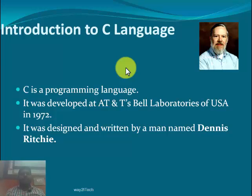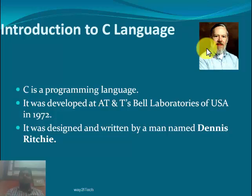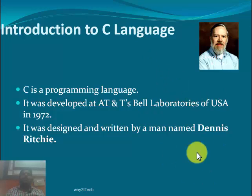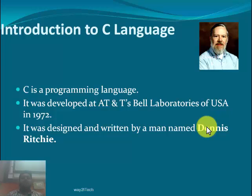Now, introduction to C language. What is C language? C is a programming language used to instruct the computer to perform some tasks. It was developed at AT&T Bell Labs in USA in 1972. It was designed and written by Dennis Ritchie, who was the main engineer behind this language. The motive to develop this language was to develop the Unix operating system. They developed C language first and then, a year later in 1973, they developed the Unix operating system.